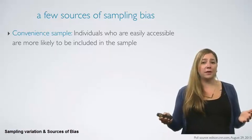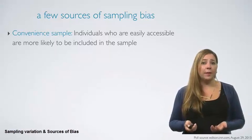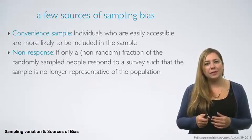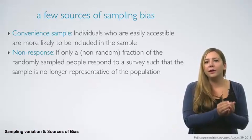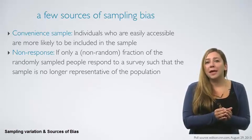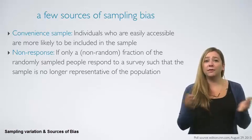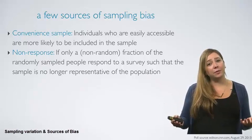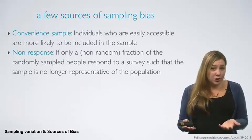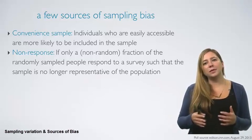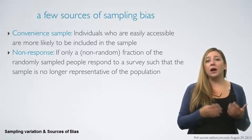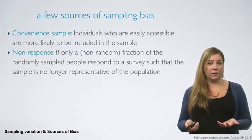Another sampling bias is called non-response. This happens if only a non-random fraction of the randomly sampled people respond to a survey, such that the sample is no longer representative of the population. For example, say you take a random sample of individuals from your city and attempt to survey them, but certain segments of the population — say those from a lower socioeconomic status — are less likely to respond to the survey.